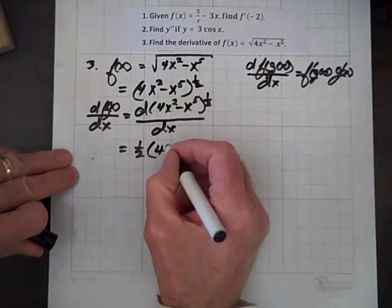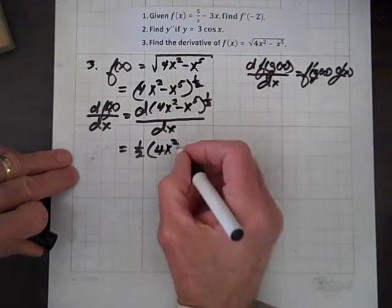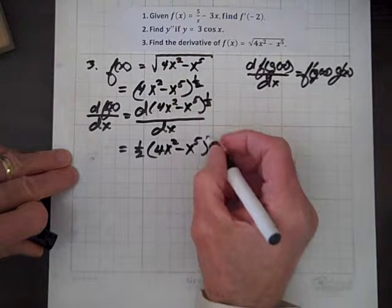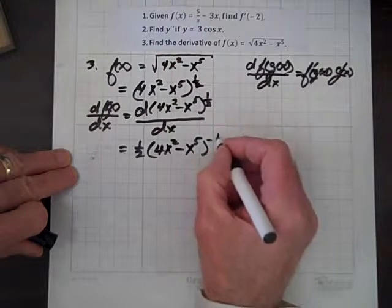We still have 4x squared minus x to the fifth. And one-half minus one is negative one-half.